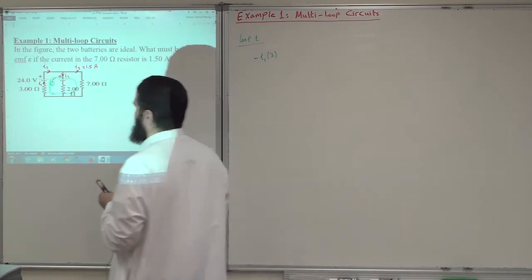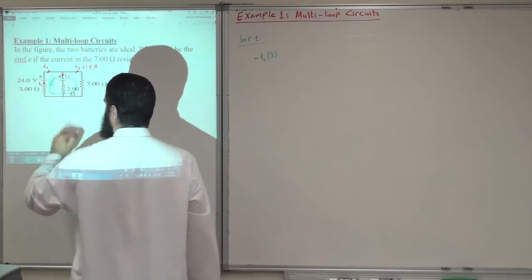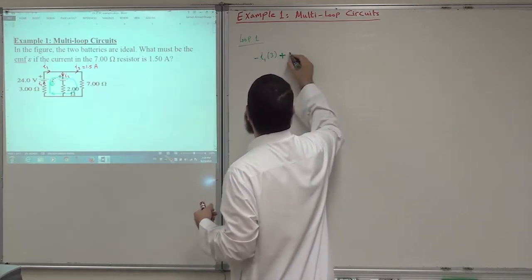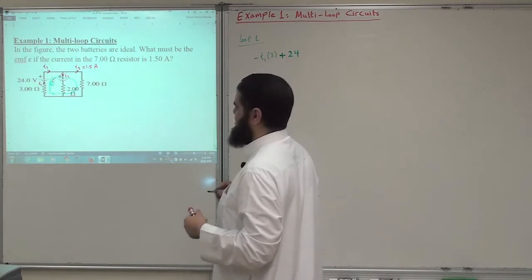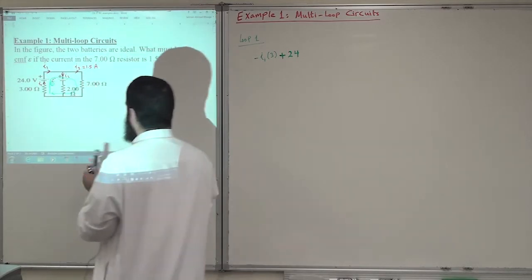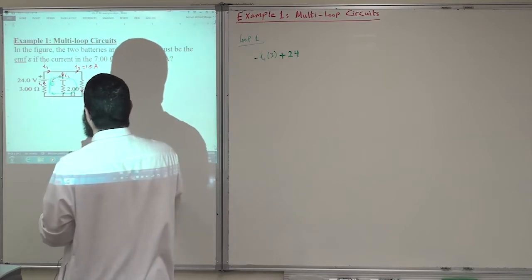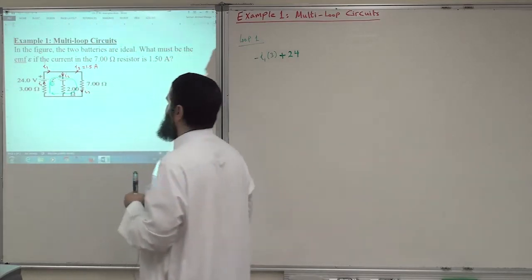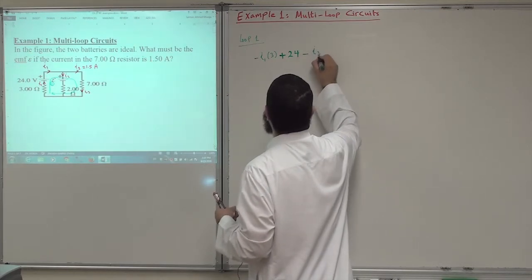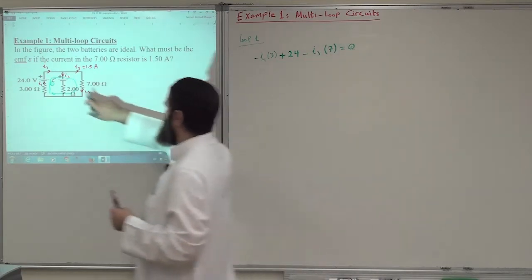Then for the battery, I go from the minus terminal to the positive terminal, so I'll experience a potential increase of 24 volts. Continuing, until I reach the 7 ohm resistor with the same direction of the current — I3 is going this way — moving across the 7 ohm resistor with the current means there will be a potential drop of minus I3, which is 1.5 ampere, multiplied by 7 ohms. All of this is equal to 0 because I complete the loop.